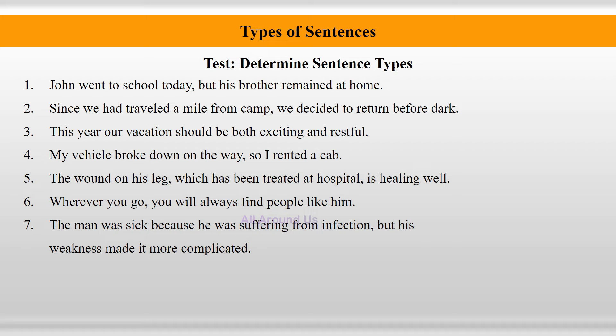Now, test — determine sentence types. 1. 'John went to school today, but his brother remained at home.' 2. 'Since we had travelled a mile from camp, we decided to return before dark.' 3. 'This year, our vacation should be both exciting and restful.' 4. 'My vehicle broke down on the way, so I rented a cab.' 5. 'The wound on his leg, which has been treated at hospital, is healing well.' 6. 'Wherever you go, you will always find people like him.' 7. 'The man was sick because he was suffering from infection, but his weakness made it more complicated.'